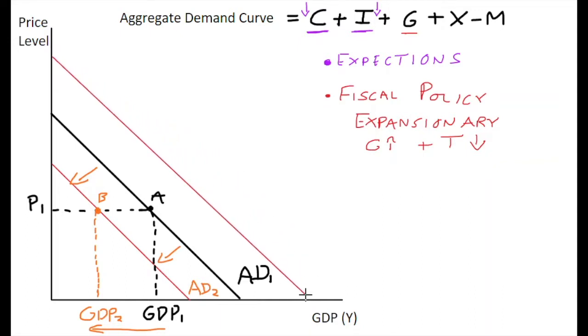So what we see here is expansionary fiscal policy or anything that increases spending in the economy will cause a rightward shift in the economy of aggregate demand. So we show a rightward shift here, we call this aggregate demand 3, we indicate the rightward shift with our arrows here over to the right.